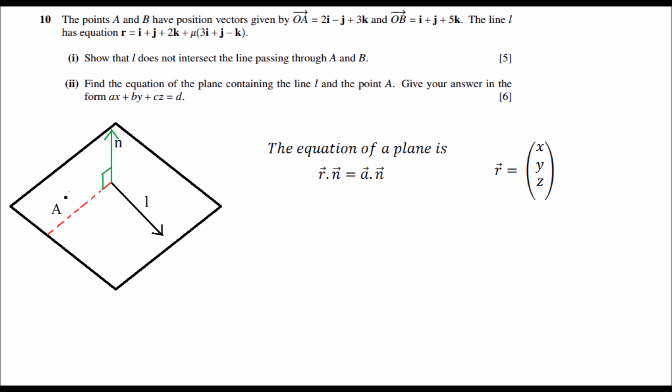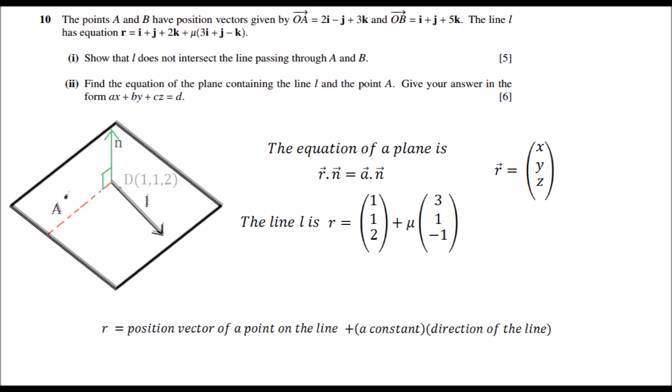The question has given us the vector equation of line L. You should recall that a vector equation is in the form R equals position vector of a point on the line plus a constant times the direction of the line.